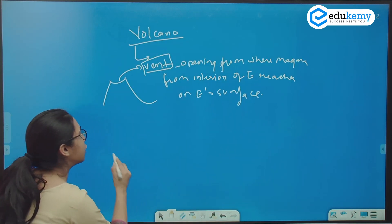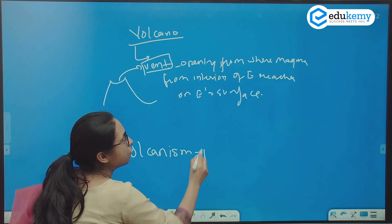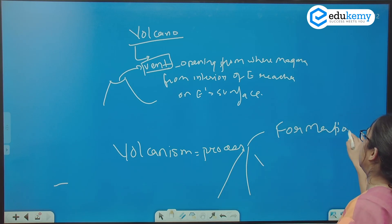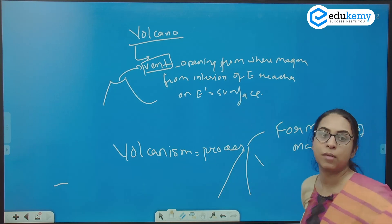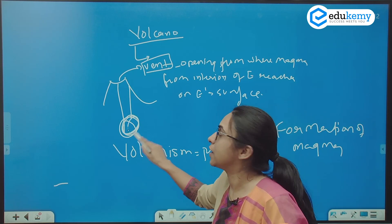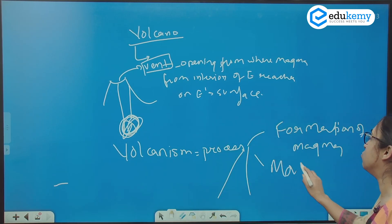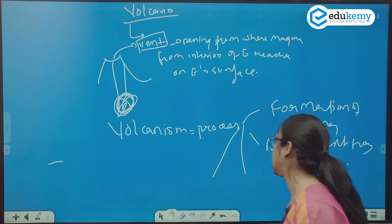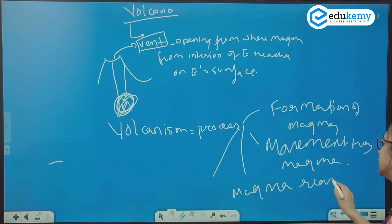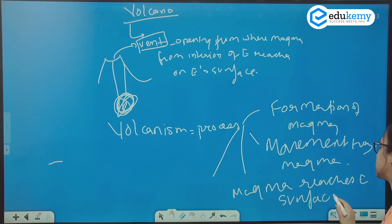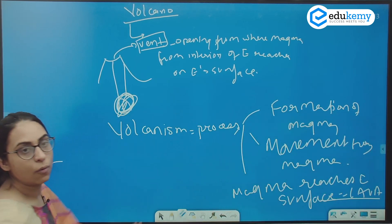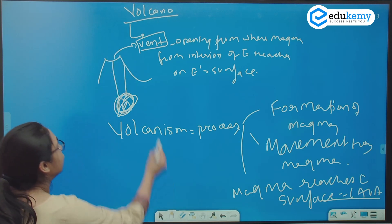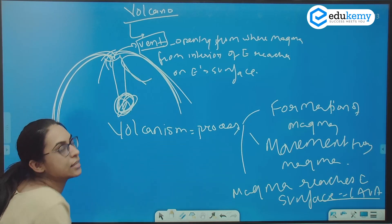Volcanism basically refers to the entire process — the process of formation of the magma, the movement of magma from the interior to the outer surface, as well as the magma reaching on the earth surface. When it reaches the earth surface, the magma is called as lava. So these three steps — the formation of magma, the movement of magma from the interior of the earth, and the pouring of the lava — is called as volcanism.